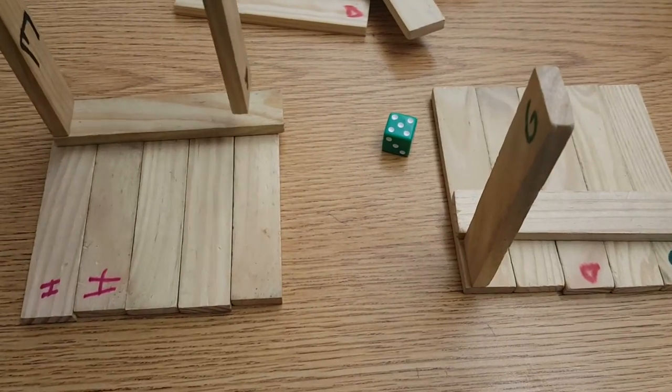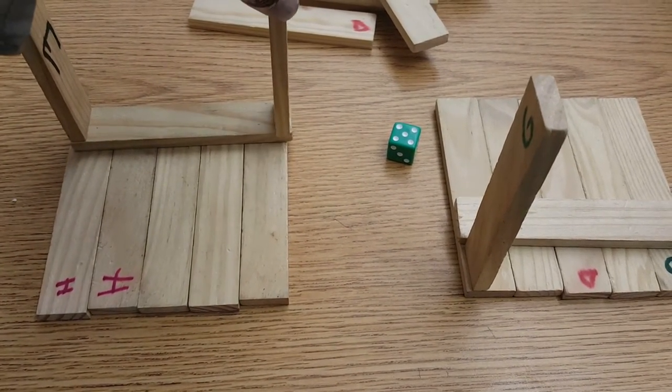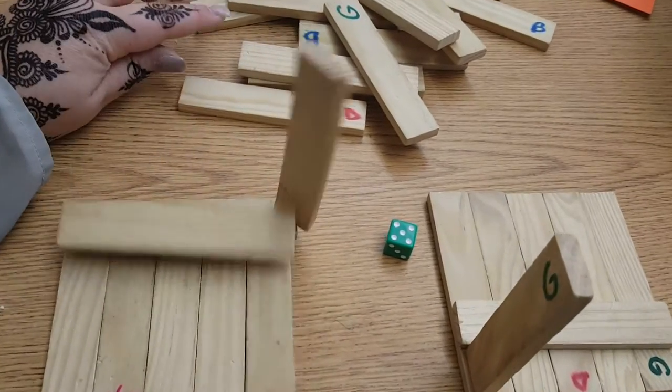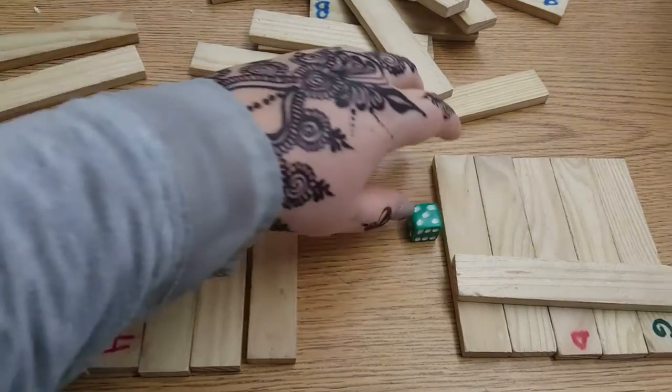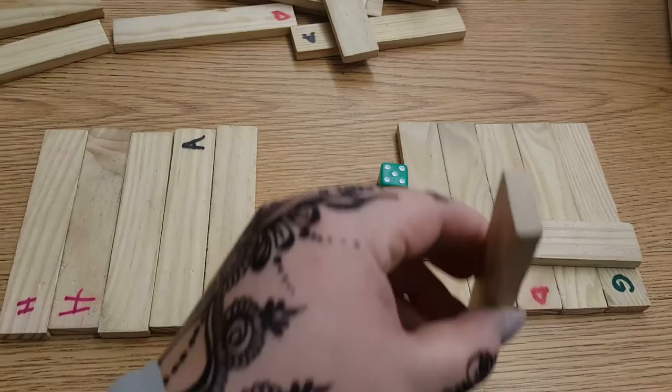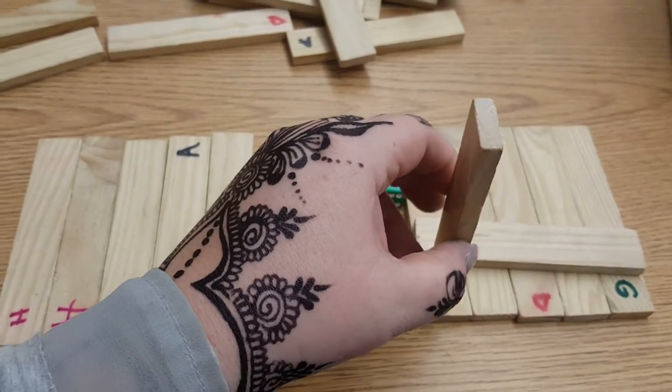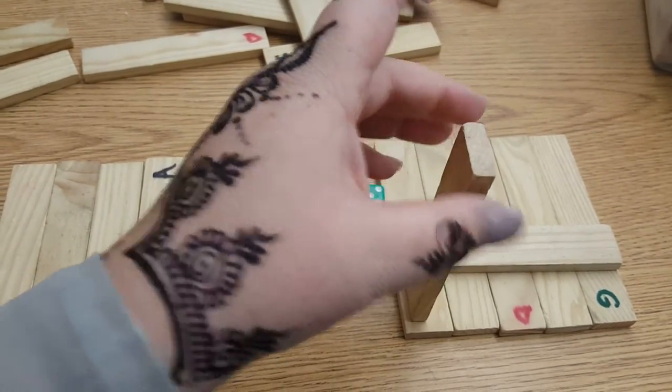One student continues to be the roller until their tower falls over and they have to start over with their five flat blocks. This player would have to start over, and because it was this player that accidentally knocked over this player's piece, they would be able to repair it and they would now be the new roller.